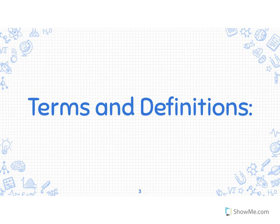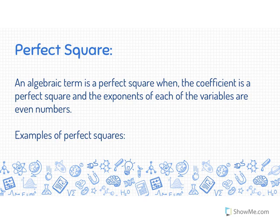Your terms and definitions. Your first term is a perfect square. An algebraic term is a perfect square when the coefficient is a perfect square and the exponents of each of the variables are even numbers. Some examples of perfect squares: 1 times 1 is 1, 2 times 2 is 4, 3 times 3 is 9 — these are all perfect squares.